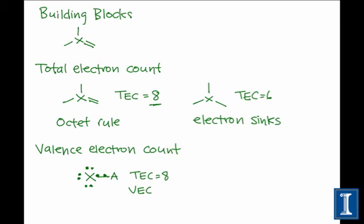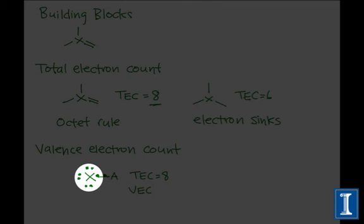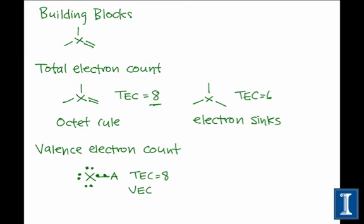If we imagine the two atoms, X and A, coming together from oblivion, we can imagine that A brings with it one electron and X brings with it one electron. And so the valence electron count of X, which includes only one electron from the single bond, is only seven here.